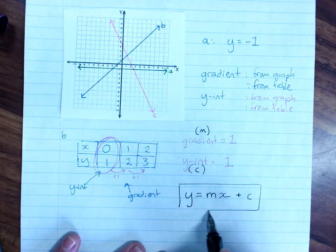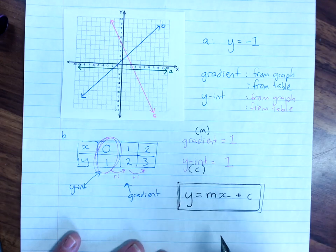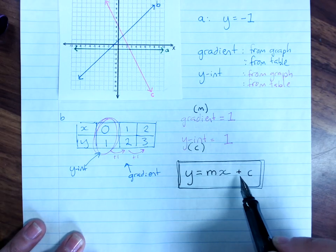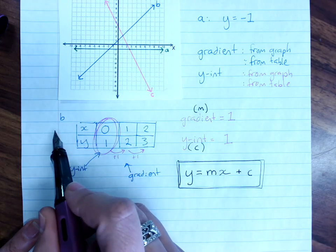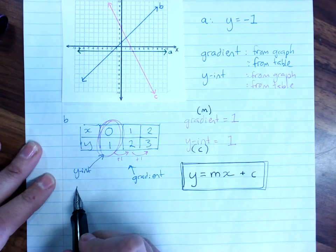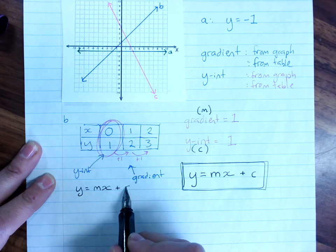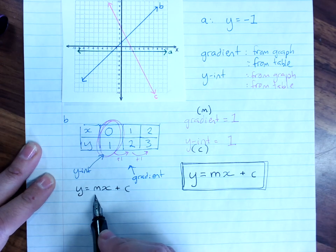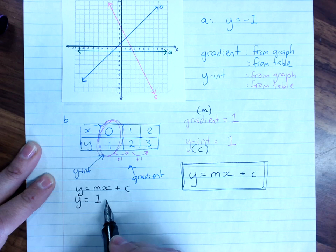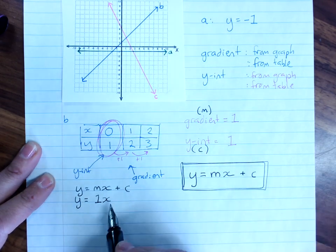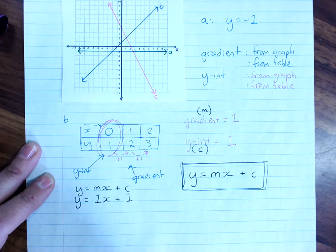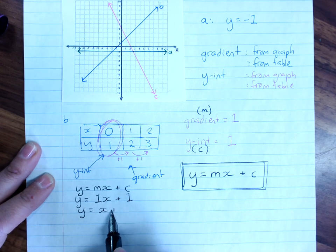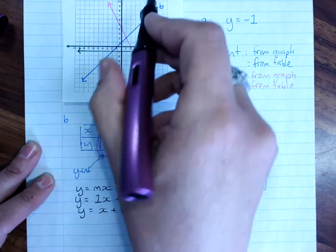Any straight line that isn't horizontal or vertical is going to be able to be written as y equals the gradient times x plus or minus the y-intercept. So for line B, we write y equals mx plus c. And then where the m is, we put the gradient, 1. We put our y equals 1x. And then we put the y-intercept, plus 1. You don't actually need to have a 1 in front of an x, so you could write y equals x plus 1. That's it. That's the rule of line B.